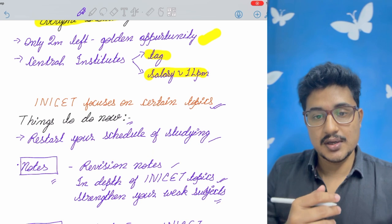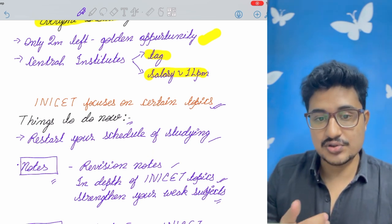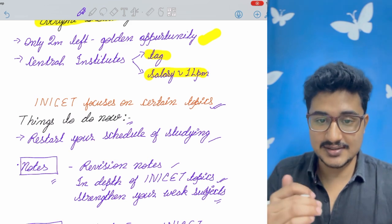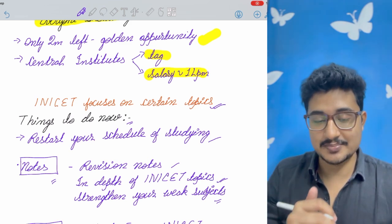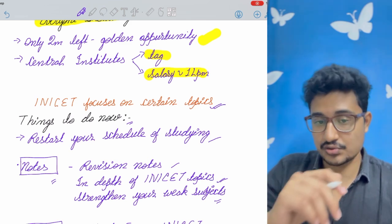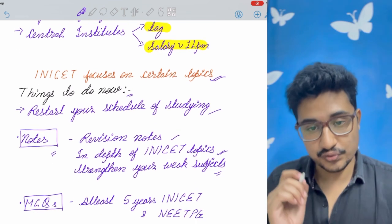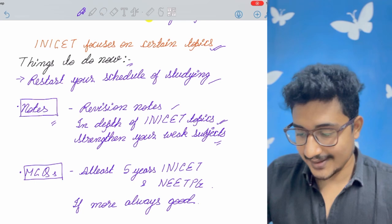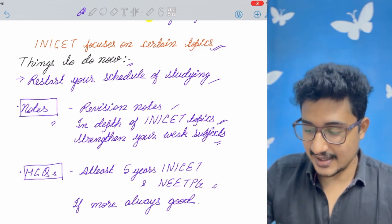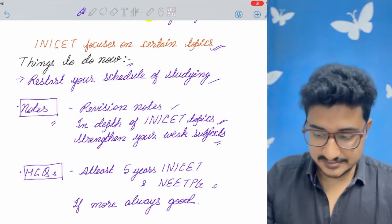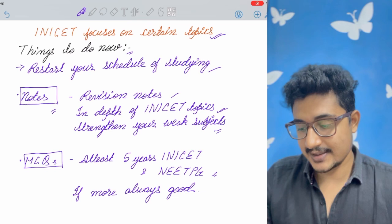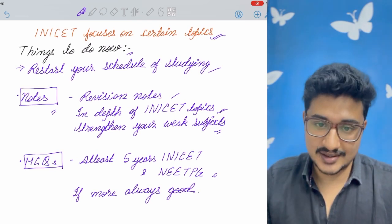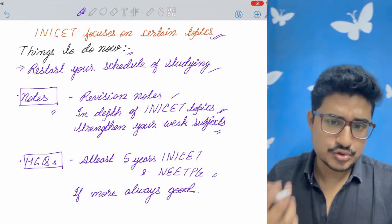Weak subjects are those in which about doing MCQs, you are getting less than 7 corrects out of 10 questions. Less than 70% marks or 70% correct means that subject is your weak subject. So this time, you should focus on your weak subjects. MCQ, if you are talking about the last 5 years of INICET and NEET-PG is mandatory for INICET, mainly the INICET. But if it is more, if you are able to do 10 years, then it will be better.